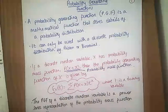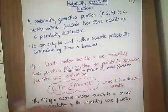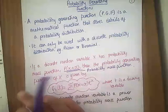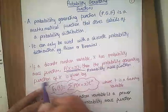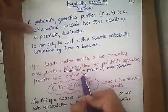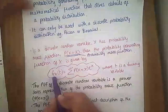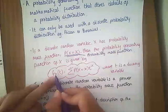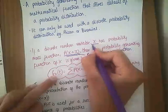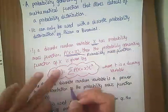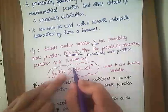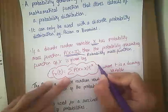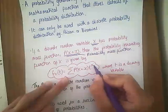So if you have a discrete random variable X with a probability mass function where the probability of X equals x — so you know all those probabilities — then the probability generating function is denoted by G subscript X of t. The subscript X refers to the random variable X. It's the sum of all of the probabilities, so each probability times t to the power of whatever value the variable takes.